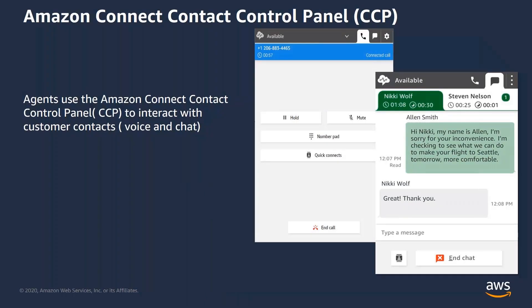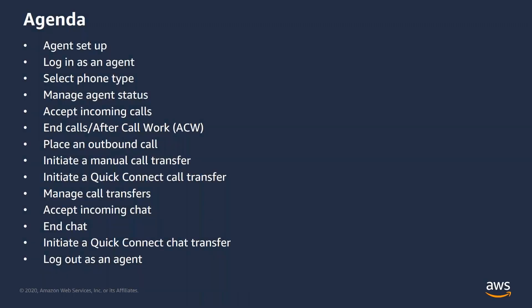In this video, I will be delivering a training on how agents can use the Amazon Connect CCP to receive calls, chat with customer contacts, transfer these contacts to other agents, put customers on hold, and perform other key agent tasks. I will walk you through the minimum requirements for an agent workstation setup, how to log in as an agent, select your preferred phone type, and manage your agent status.